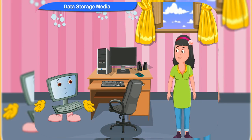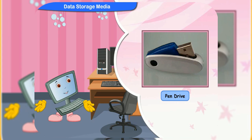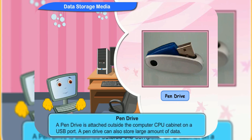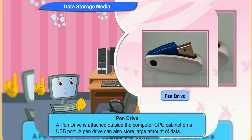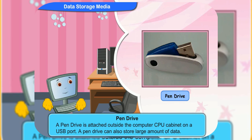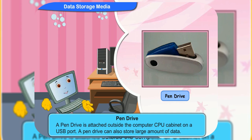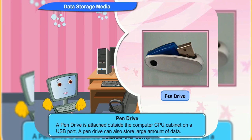What about the pen drive? The pen drive is a pen-like device. It is attached outside the computer's CPU cabinet on a USB port. A pen drive can also store a large amount of data. A pen drive is the most convenient device to carry data from one place to another as we can put it in our pocket.